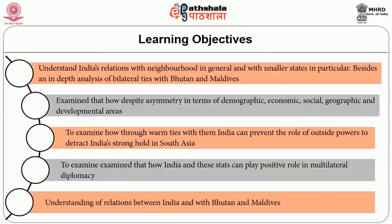In this lesson, an effort is made to understand India's relation with neighbourhood in general and with smaller states in particular. An in-depth analysis of bilateral ties with Bhutan and Maldives is made. It is examined how, despite asymmetry in terms of demographic, economic, social, geographic and developmental areas, India has been successful in building goodwill and cooperation with these smaller states. An effort is also made to examine how through warm ties with them, India can prevent the role of outside powers to distract India's stronghold in South Asia, and how India and these states can play a positive role in multilateral diplomacy.